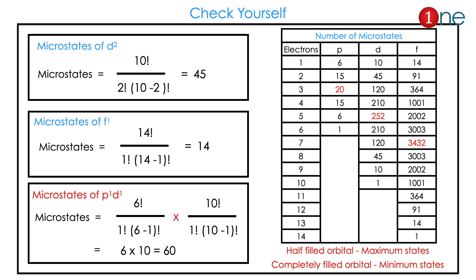Here are problems to check yourself — find the maximum number of electrons in each orbital and solve. The d2 system has 45 states, f1 has 14 states. The interesting one is p1 and d1 together — you have two different orbitals, so you multiply the p possibilities by the d1 possibilities. That is why the answer is 60.